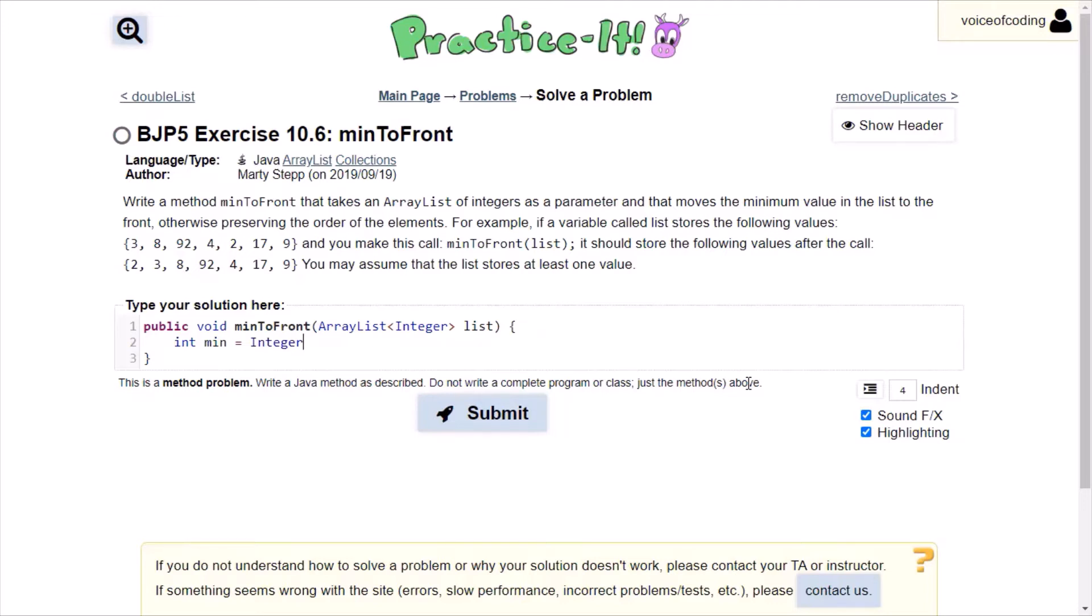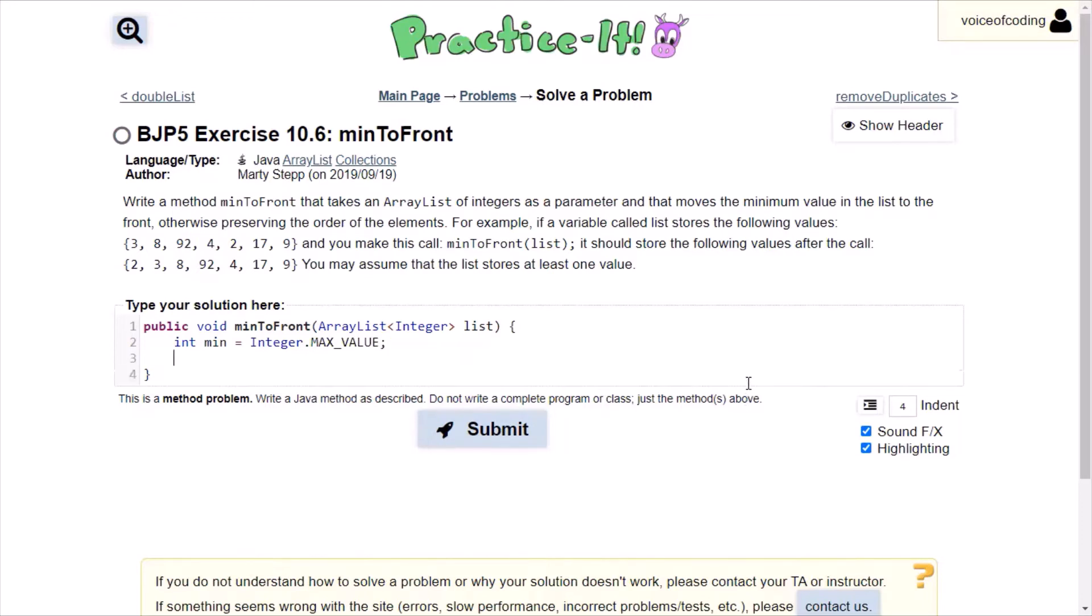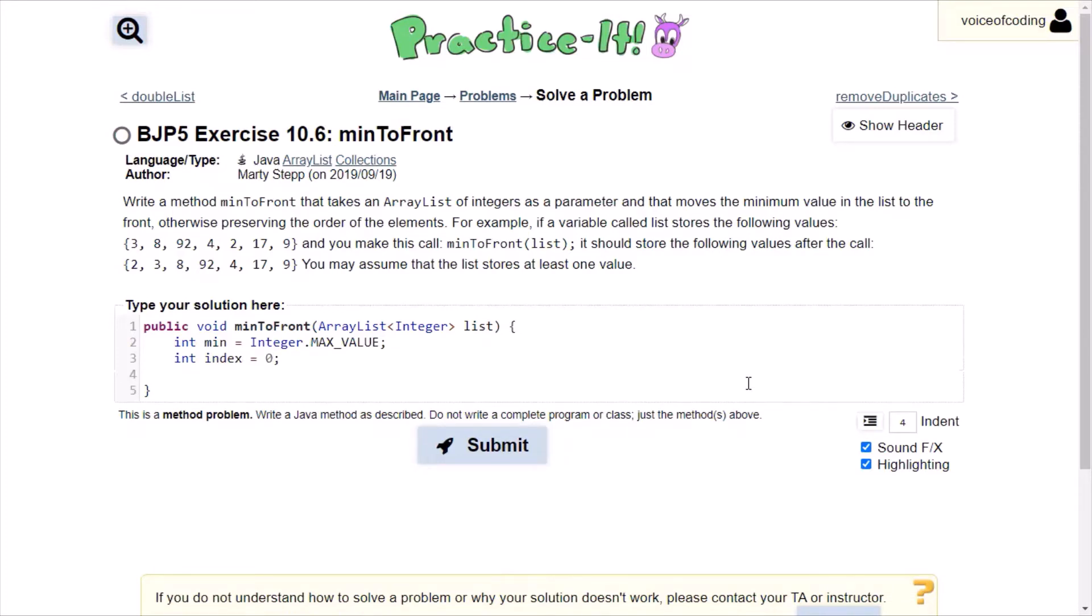Because that way, whatever is in the list is probably going to be smaller than the Integer.MAX_VALUE. So I'm going to set it to Integer.MAX_VALUE as like a placeholder for now. And then our index. It doesn't really matter what this is. I'm going to put it at zero. But yeah, it's going to be the index of our minimum value.